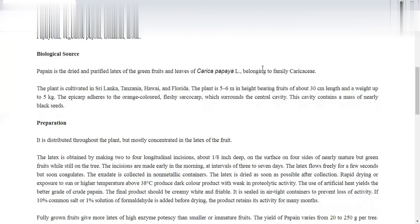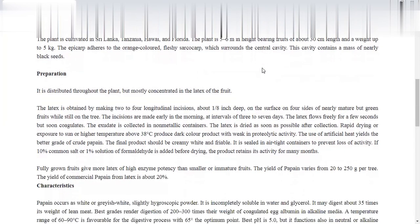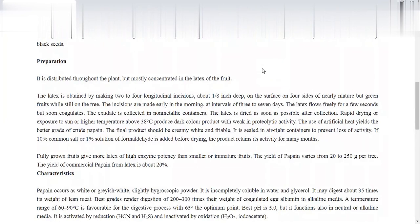Preparation: Papain is distributed throughout the plant, but it is only white milk in the fruit. The latex is obtained by making 3 to 4 longitudinal incisions around 1/8 inch deep on the surface of the four sides. The incisions are made early in the morning, at intervals of 3 to 7 days.